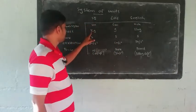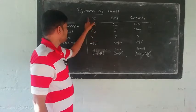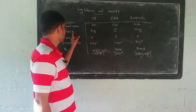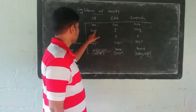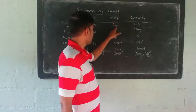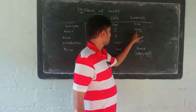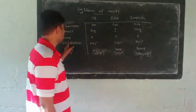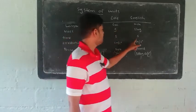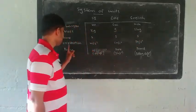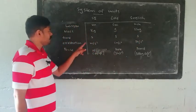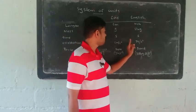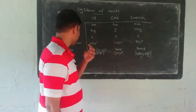For mass: in SI the unit is the kilogram, in CGS it is the gram, and in the English system it is the slug. For time: in SI, CGS, and English unit systems, the unit is the second.